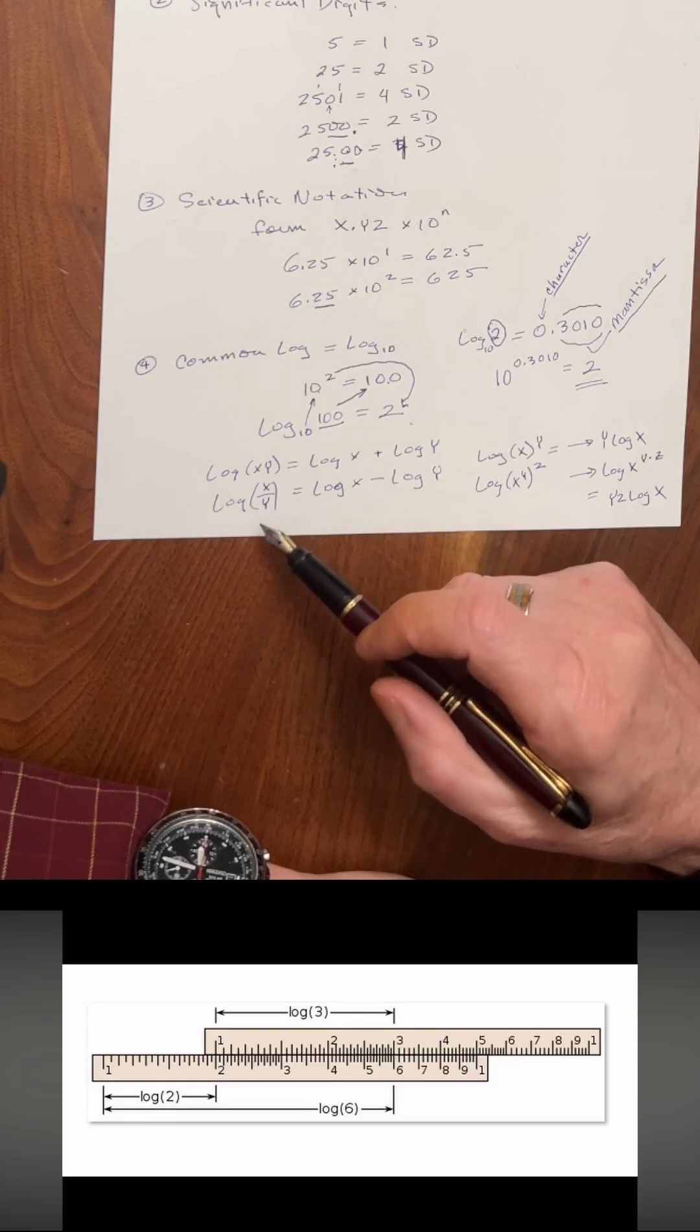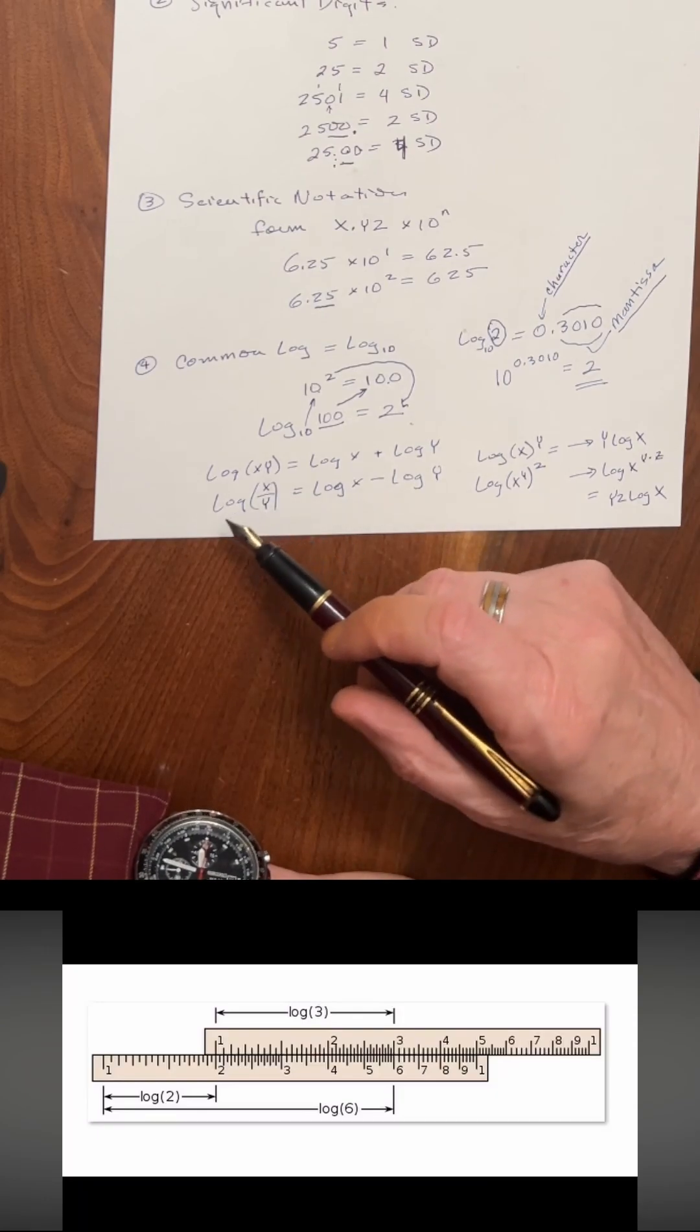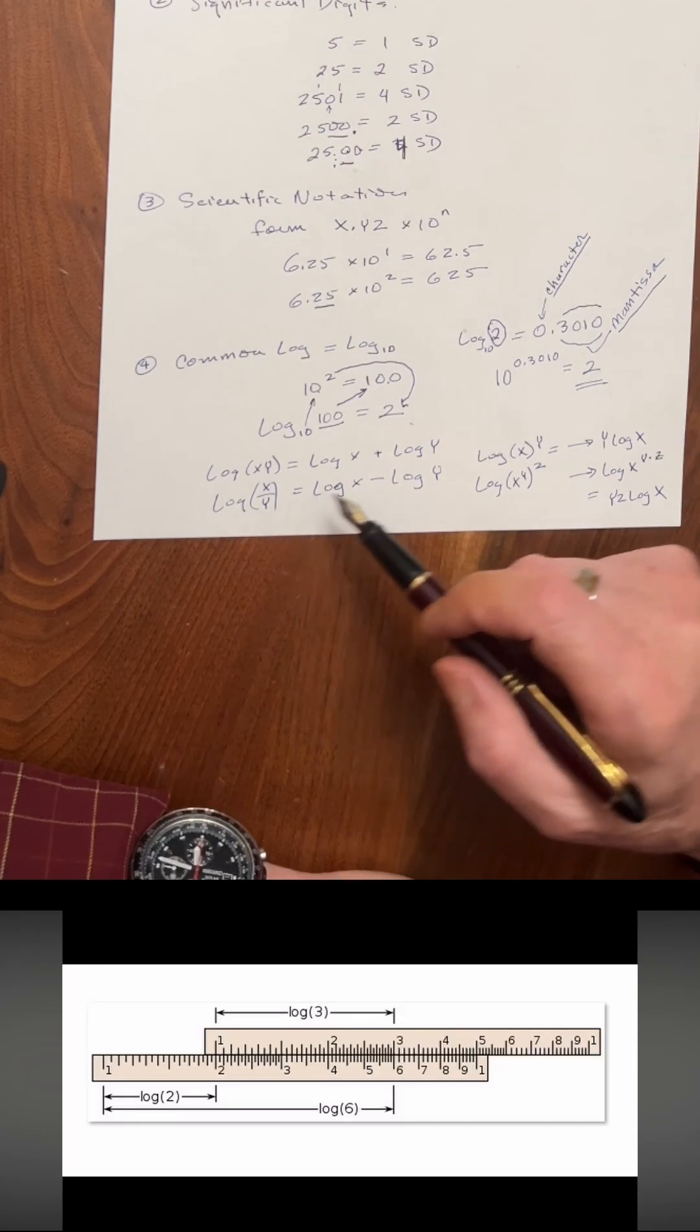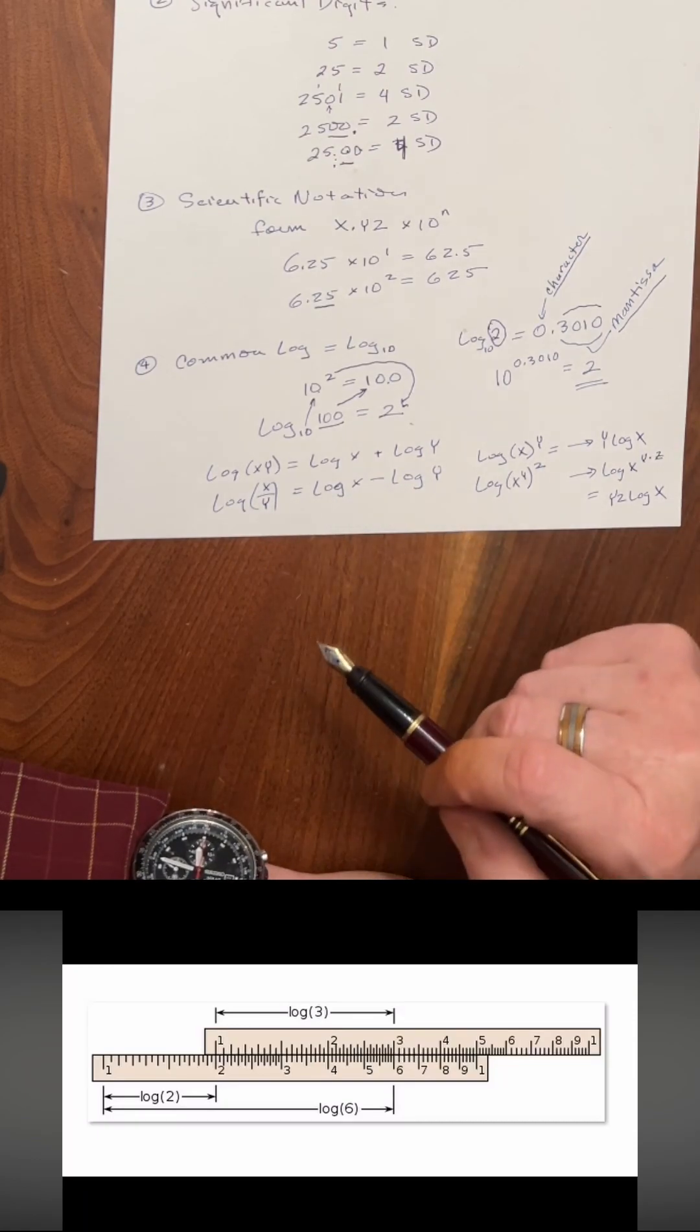We divide in a similar fashion. So if we are dividing x by y, if we take the log of x over y, that equals the log of x minus the log of y.